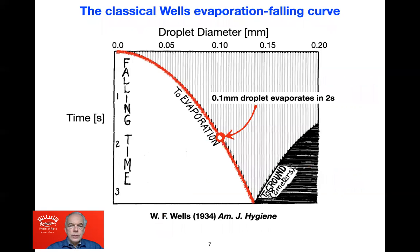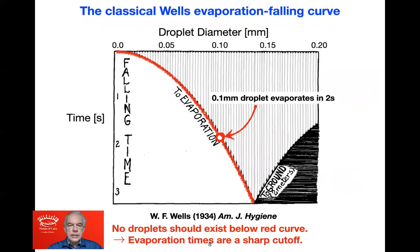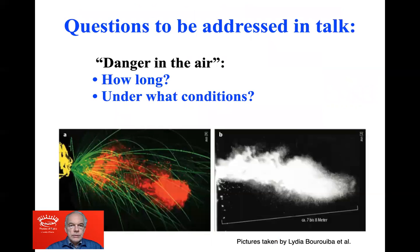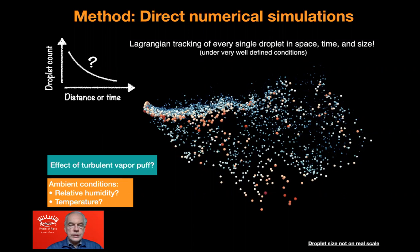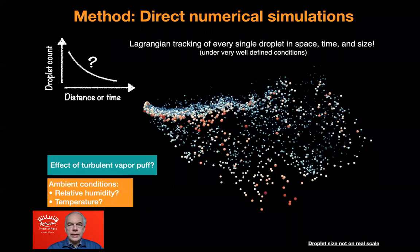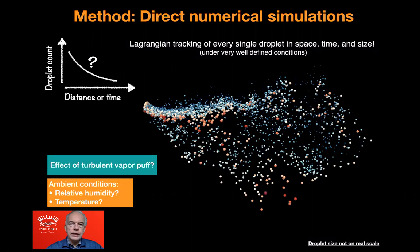As an example, the 100 micrometer droplet has a lifetime of two seconds. No droplet should exist below this red curve, because evaporation would imply a sharp cutoff. But is this really true? We will address this question using direct numerical simulations: Lagrangian tracking of every single droplet in space, time, and size under extremely well-defined conditions possible in numerical simulations.